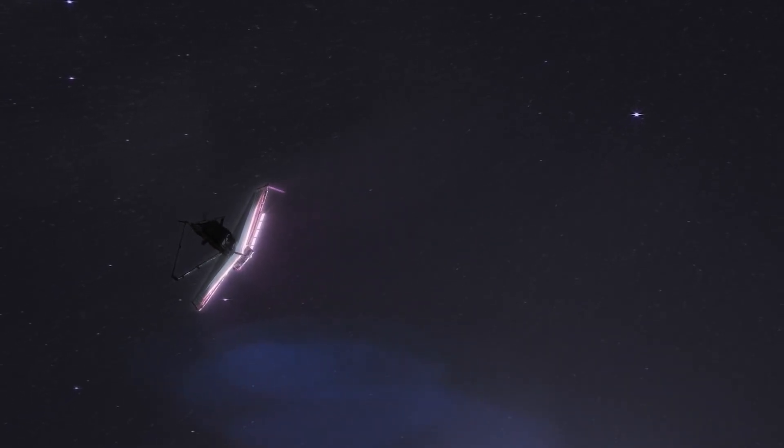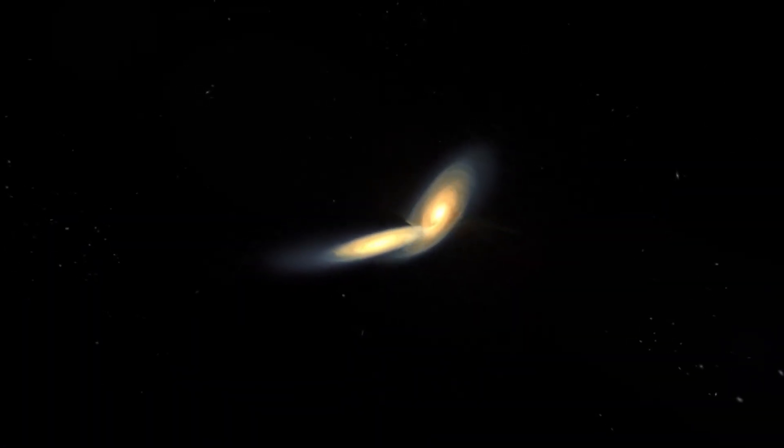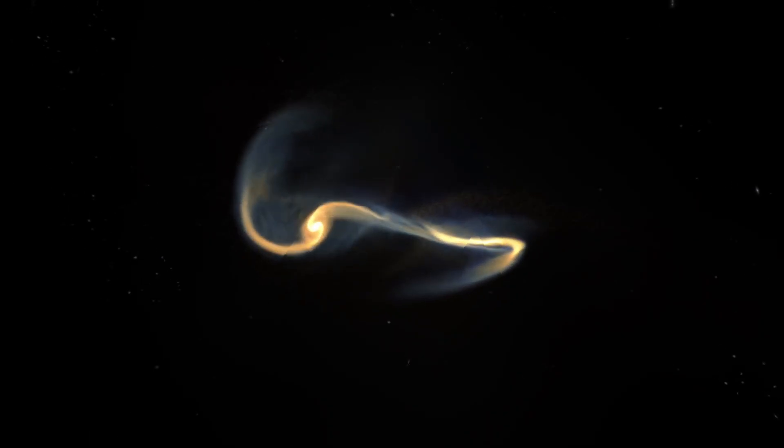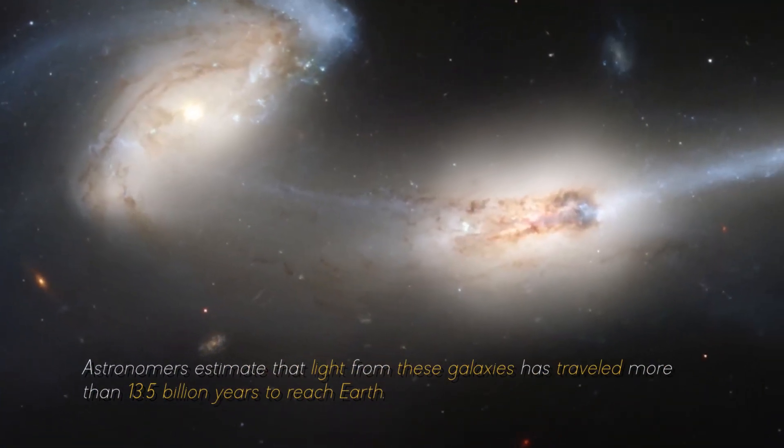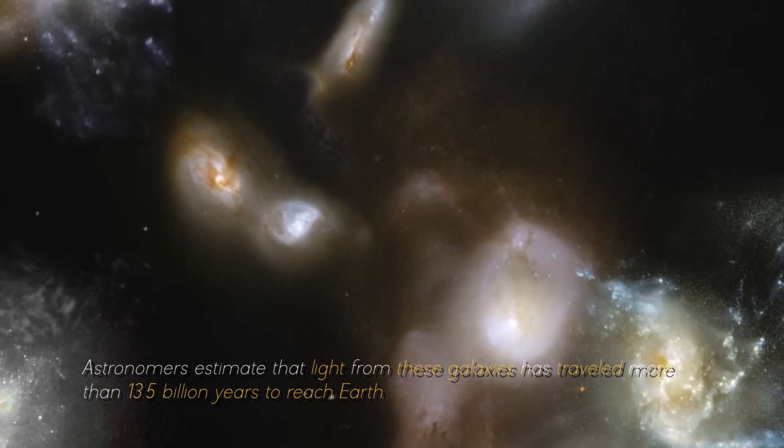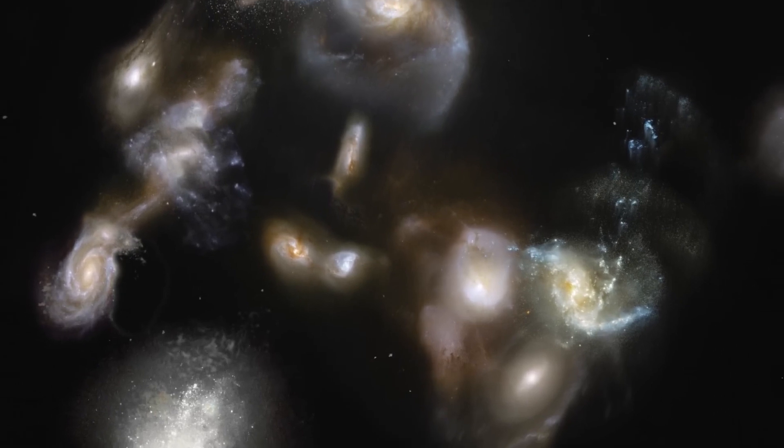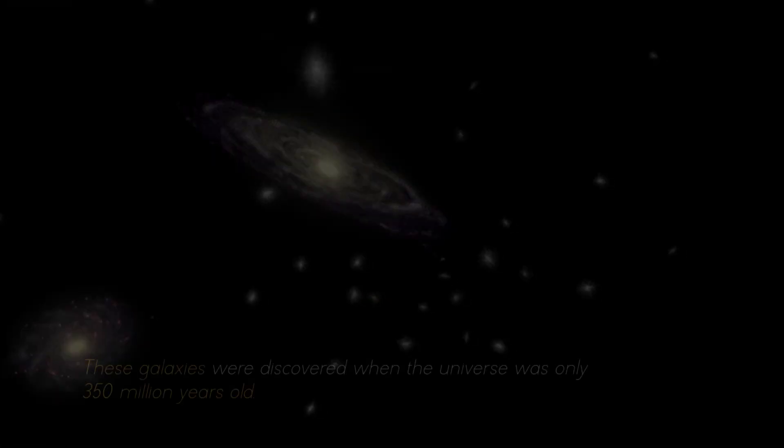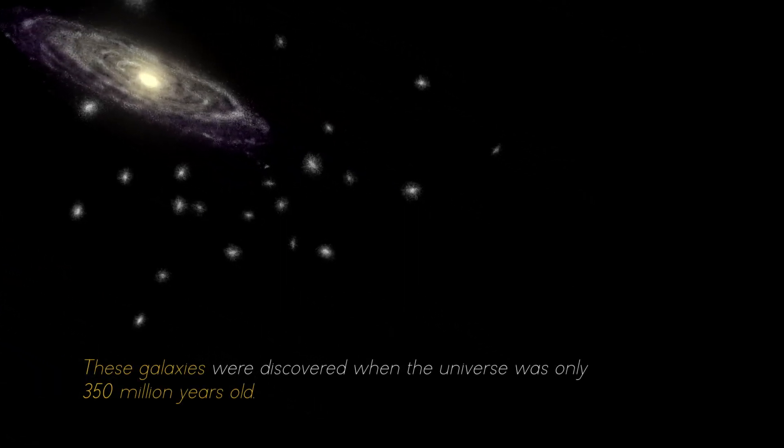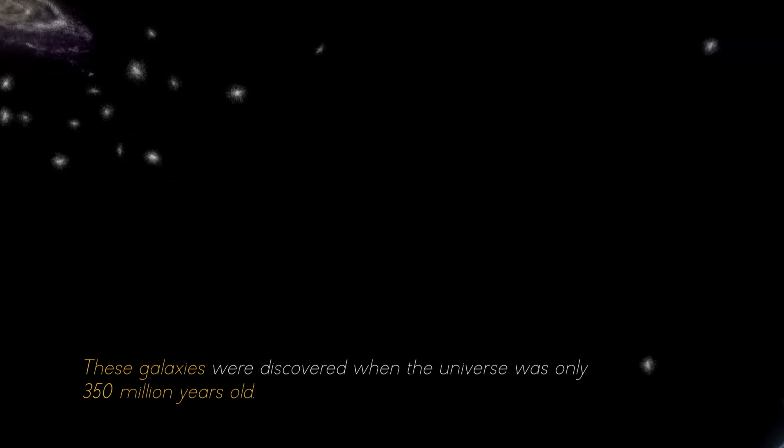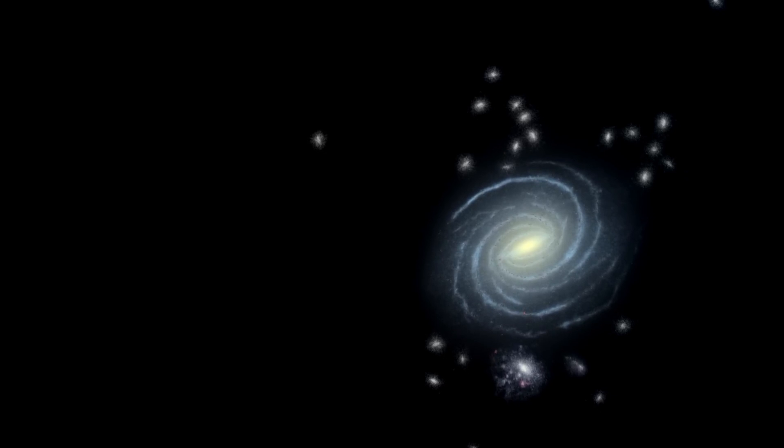Thanks to this revolutionary telescope, we can now observe the oldest galaxies ever seen. Astronomers estimate that light from these galaxies has traveled more than 13.5 billion years to reach Earth, giving us a glimpse into the distant past of the universe. These galaxies were discovered when the universe was only 350 million years old, shedding light on how quickly the first generations of galaxies emerged.